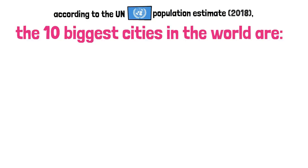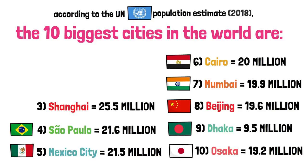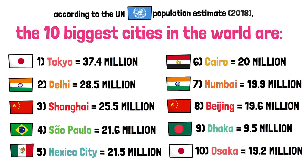Let's go straight to the reason why you probably clicked on this video. According to the UN population estimate, the 10 biggest cities in the world are Osaka in Japan, Dhaka in Bangladesh, Beijing in China, Mumbai in India, Cairo in Egypt, Mexico City in Mexico, São Paulo in Brazil, Shanghai in China, Delhi in India, and Tokyo in Japan.